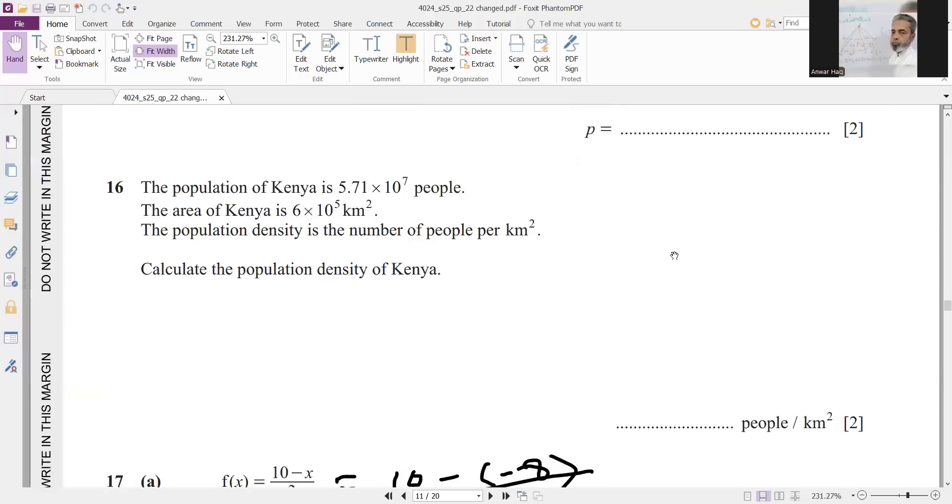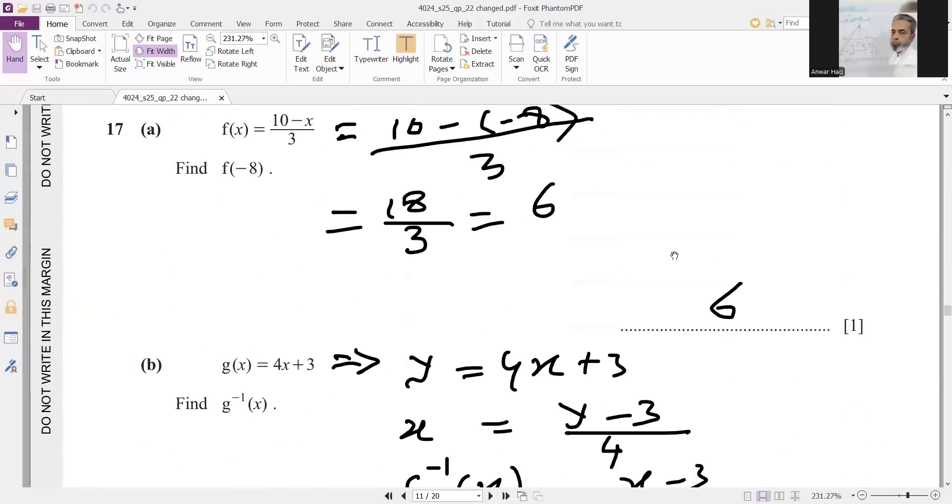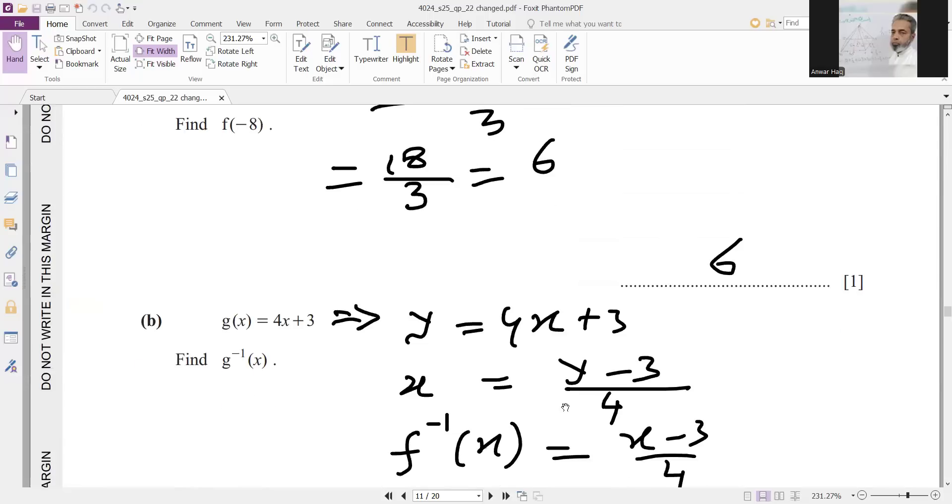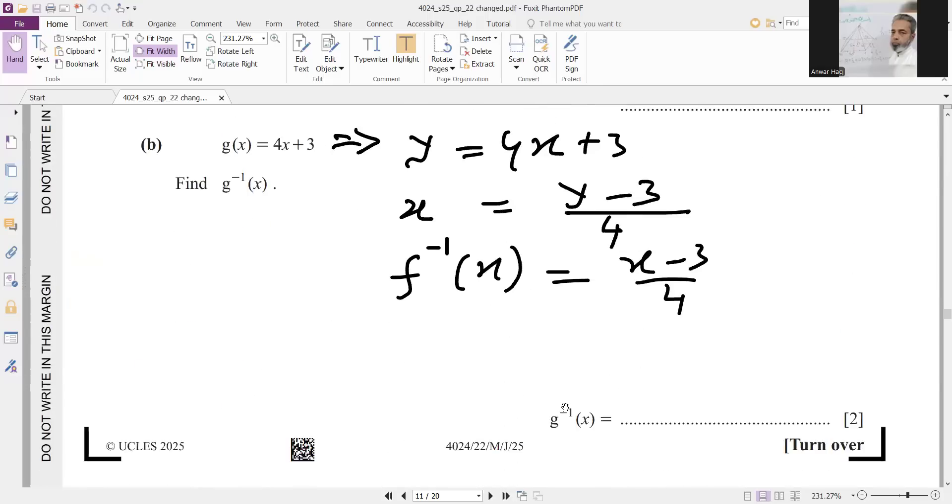Now this is question 17. f(x) equals 10 minus x over 3, so you need to find f(-8). Simply put the value of x as minus 8, so you will get answer 6. For g inverse x, put g(x) equals y and make x subject to the formula, so you will get f inverse x equals x minus 3 over 4.